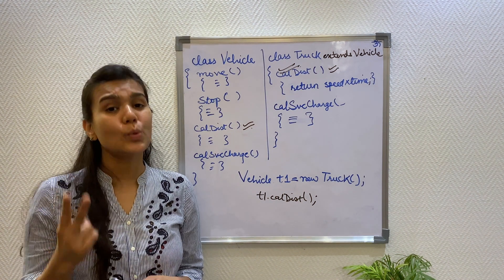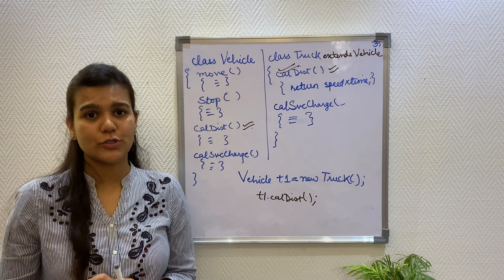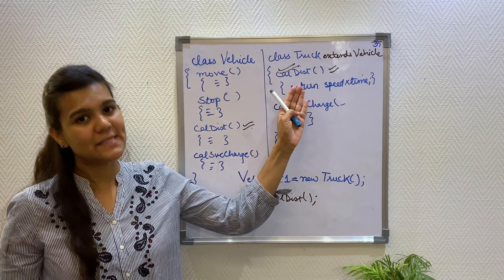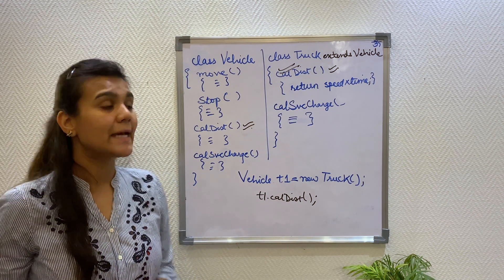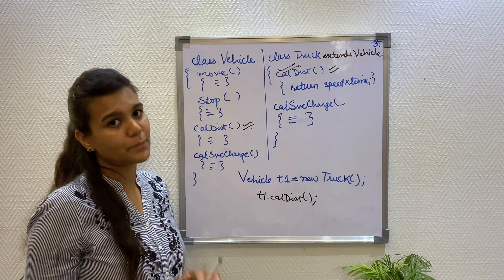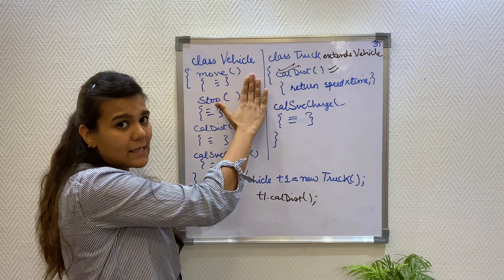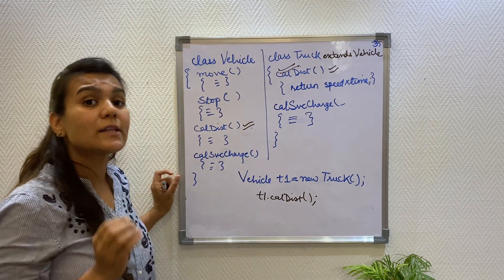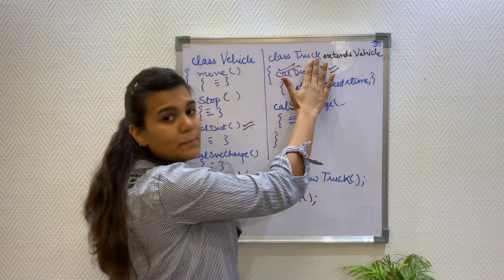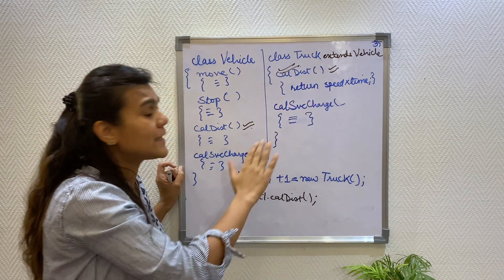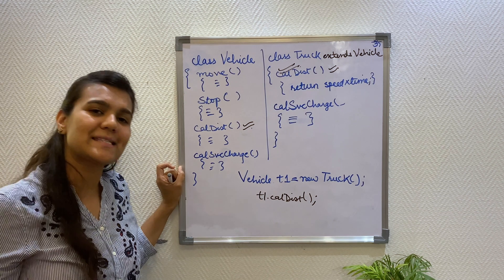For polymorphism to work, there are two conditions that need to be fulfilled. First, the method signature in both the classes needs to be the same. The compiler looks at the reference type to call the method — it checks whether the method is present in the reference type. Here, the calculate distance method is present in the vehicle class. But during runtime, the actual object class is checked, and here the truck class will be checked for the calculate distance method. Now, if there is a difference in the arguments, the call will not happen and hence an exception will occur.